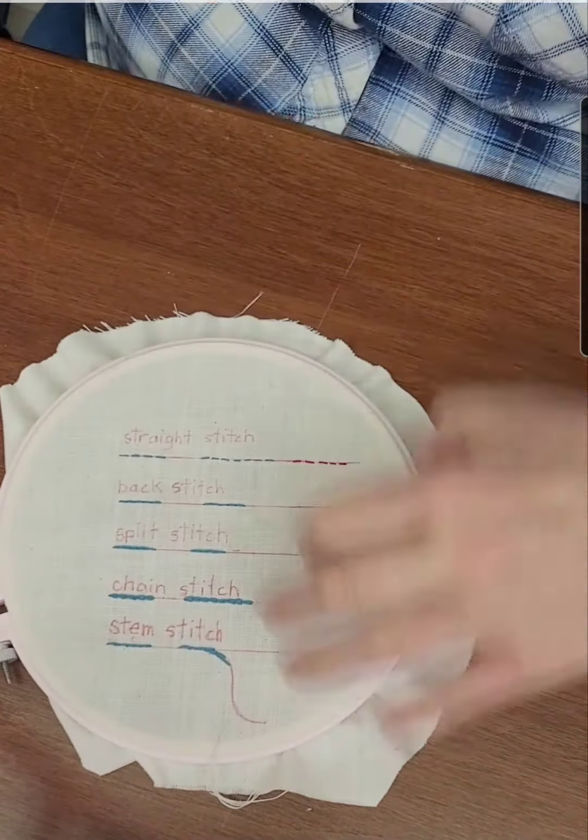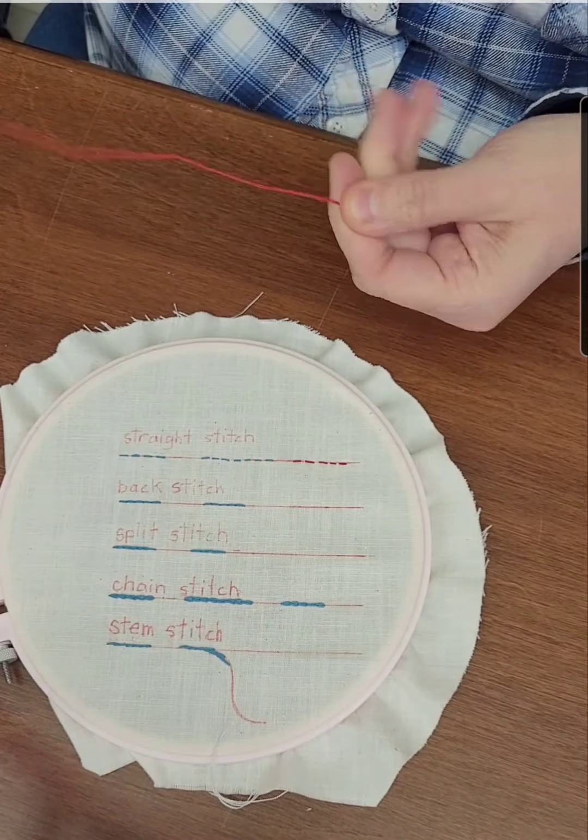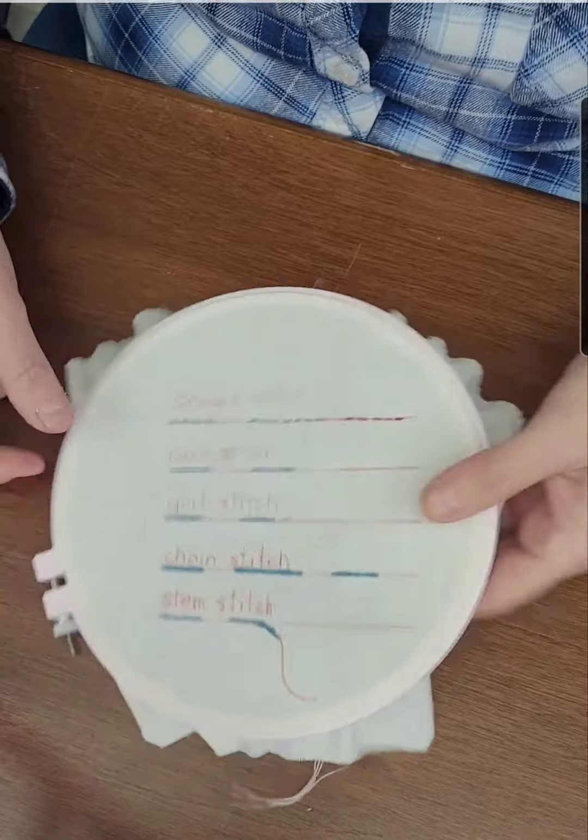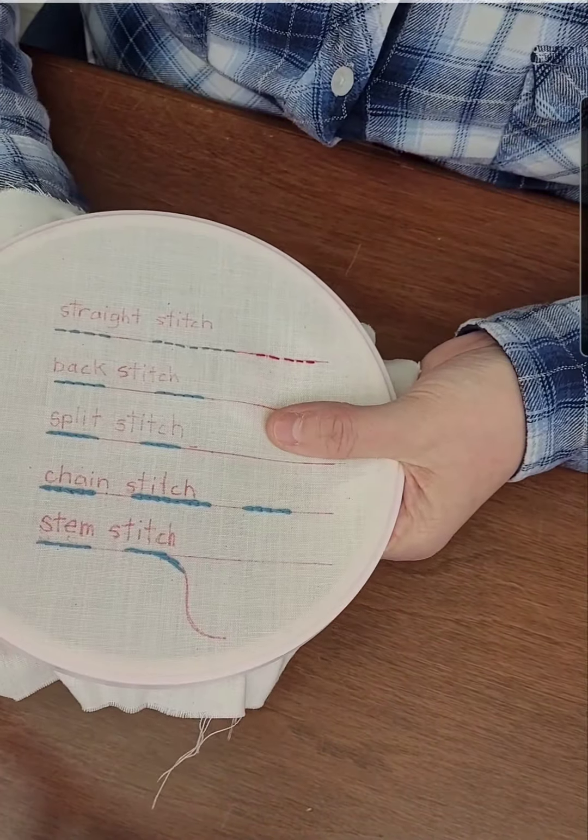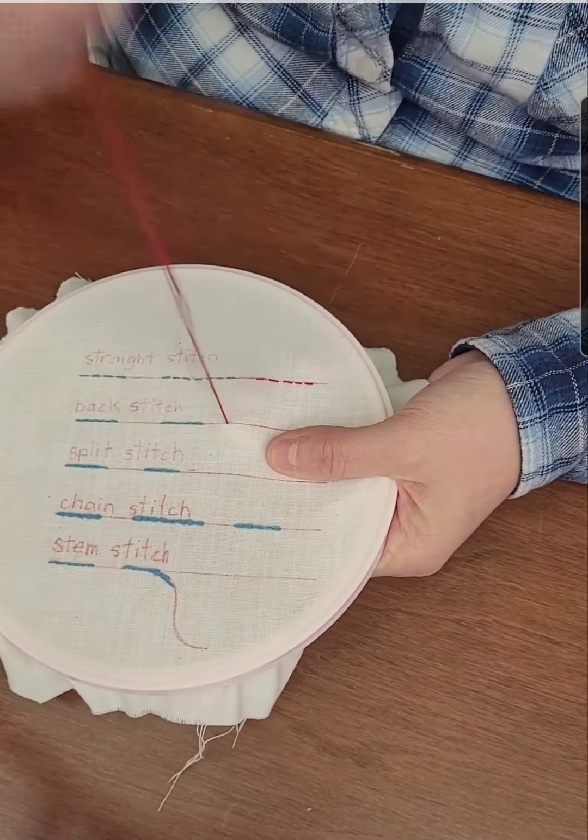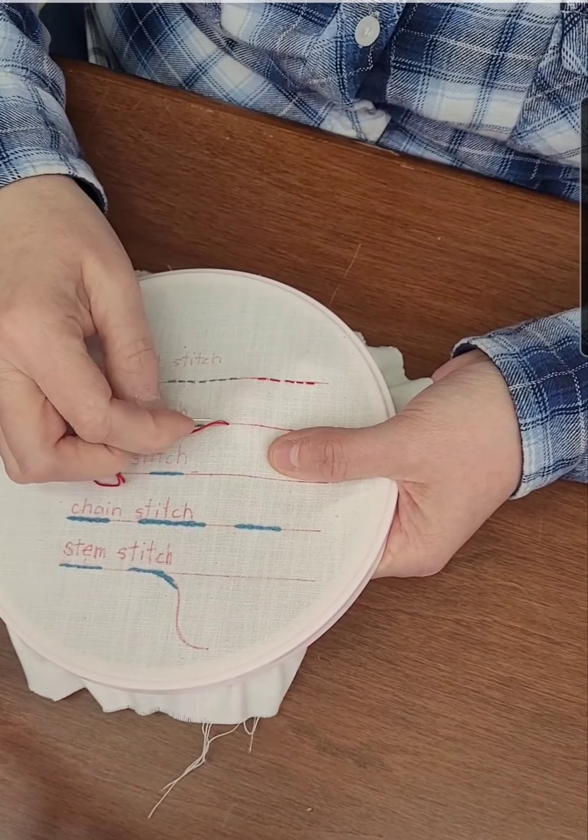So for the sake of just getting the demo done, I didn't do any finishing on the back. So the next stitch is the back stitch. This is a nice continuous line that you can use for outlining.